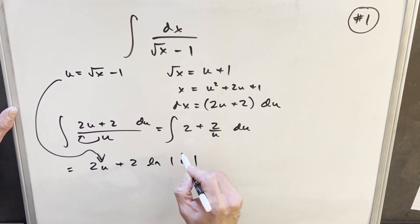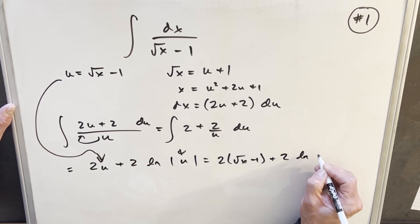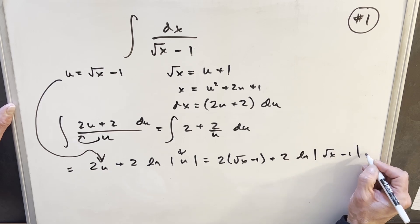Back substituting, we have 2 square root of x minus 1 plus 2 ln absolute value square root of x minus 1.